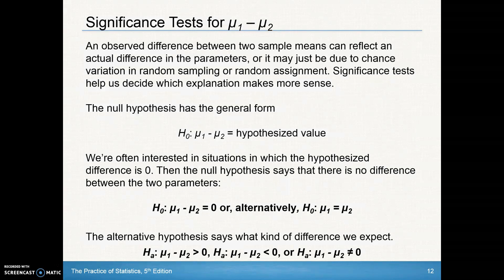An observed difference between two sample means can reflect an actual difference in the parameters. We always use our samples to estimate our parameters, so it can reflect the actual difference, or it just might be due to chance variation in random sampling or random assignment. Significance tests help us decide which explanation makes more sense.